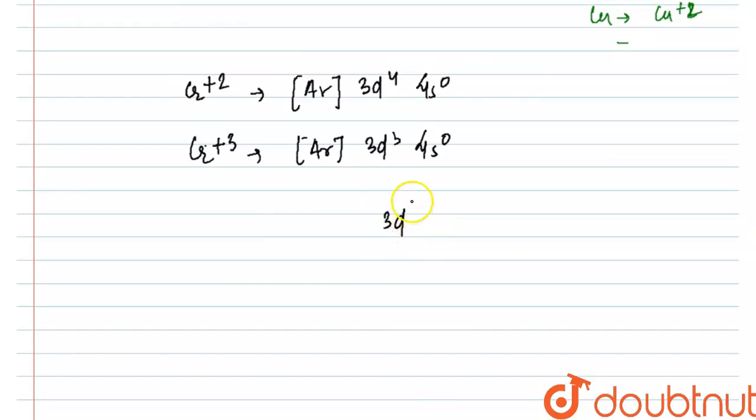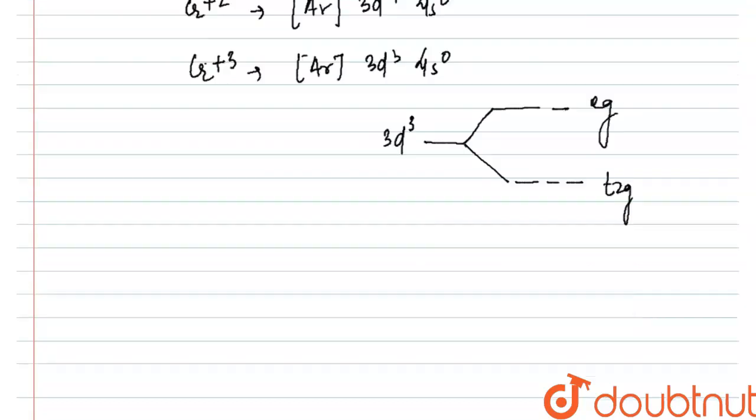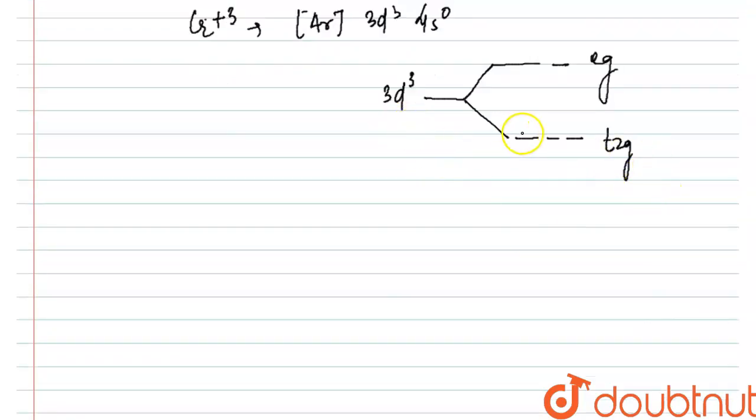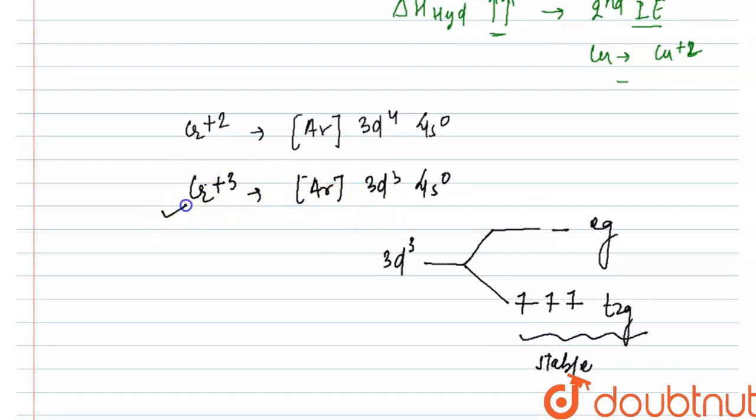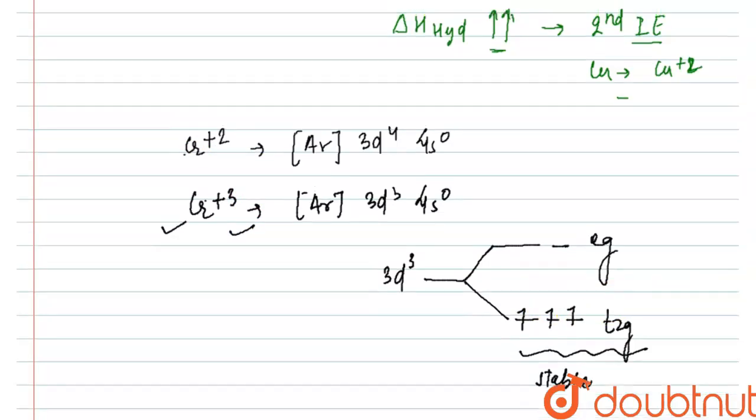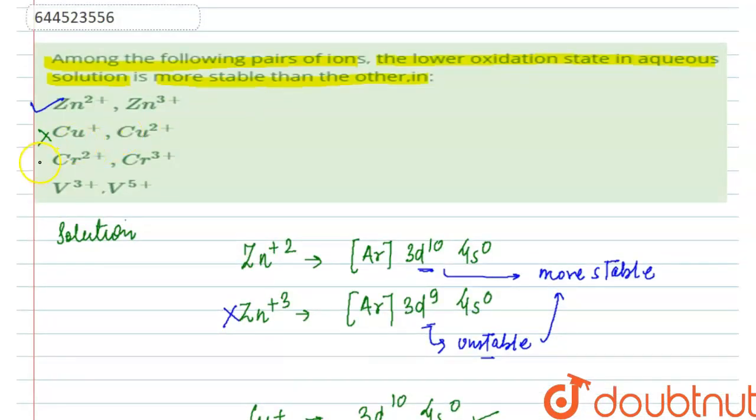Now what happens is that in the crystal field splitting theory, when a ligand attacks the orbital of chromium+3, it splits into two energy levels - t2g and eg. Having three electrons left in d orbital, the t2g energy level is half filled, and now this half-filled t2g subshell becomes exceptionally stable. So now out of these two, we can say that Cr+3 is more stable than Cr+2. So Cr+2 always wants to acquire the configuration of Cr+3 because it is more stable in aqueous solution. So this one is also incorrect.